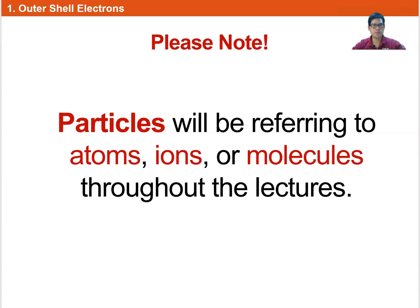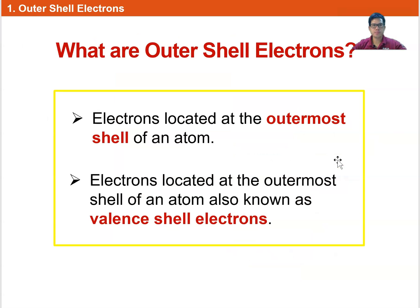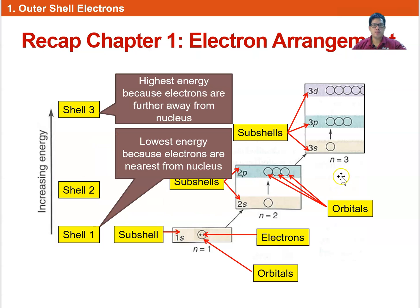This is what we learned in Chapter 1 — the box diagram with shell 1, shell 2, and shell 3. The number of protons determines what kind of element it is. Electrically neutral atoms have an equal number of protons and electrons — for example, if they have one proton then they have one electron, and so forth.